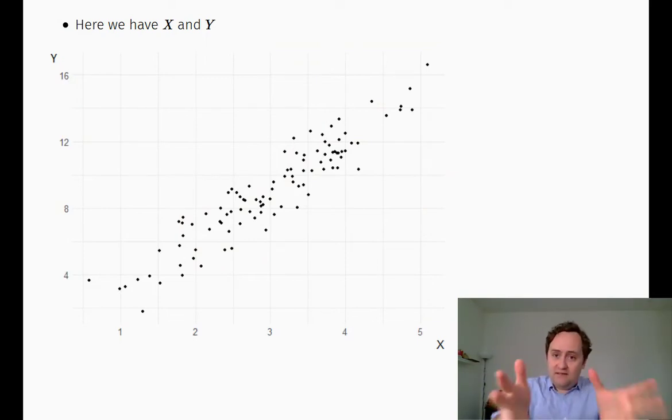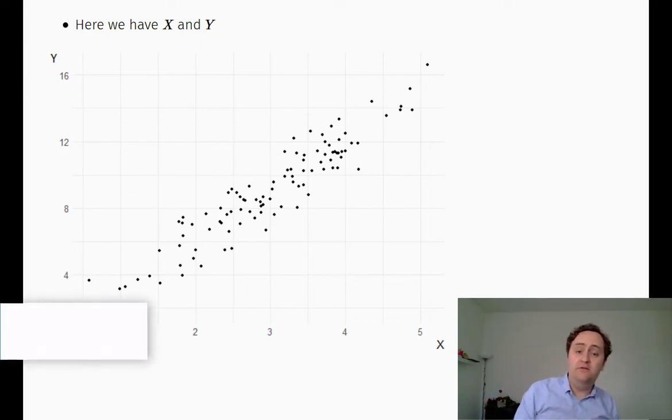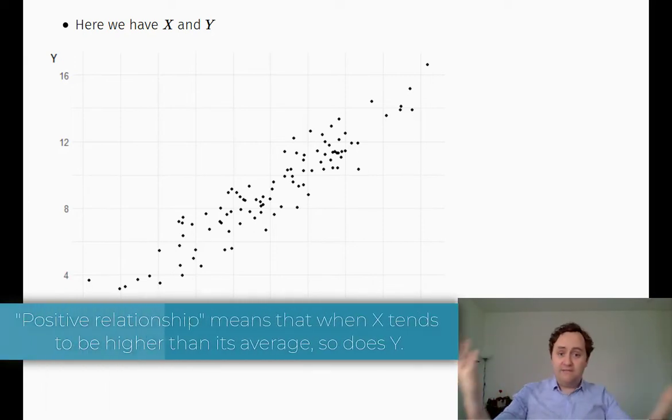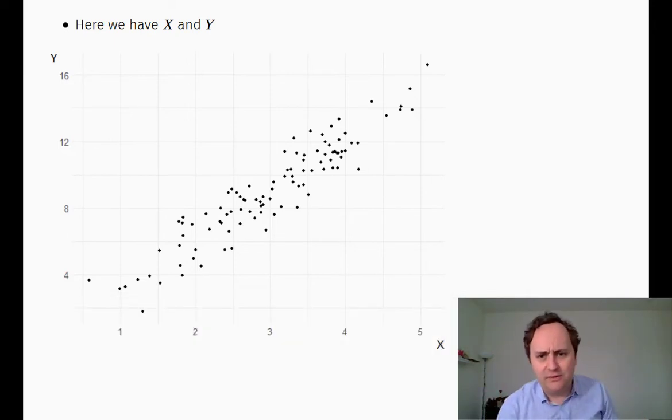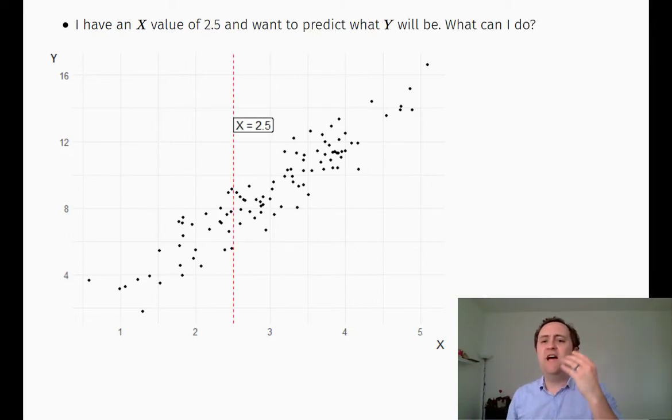Now, you can see pretty clearly, the data that I've given here has a pretty clear relationship. There is a positive relationship. The higher values of x appear to be related to higher values of y at the same time. So that's pretty good. Now, the problem is, though, if I want to actually take this and describe precisely what the relationship is, or if I want to make a precise prediction about what I think y is, given what x is, I still have some more work to do. Because imagine that I have an x value of 2.5, and I want to say, okay, given that I have an x of 2.5, what do I predict the value of y is going to be?